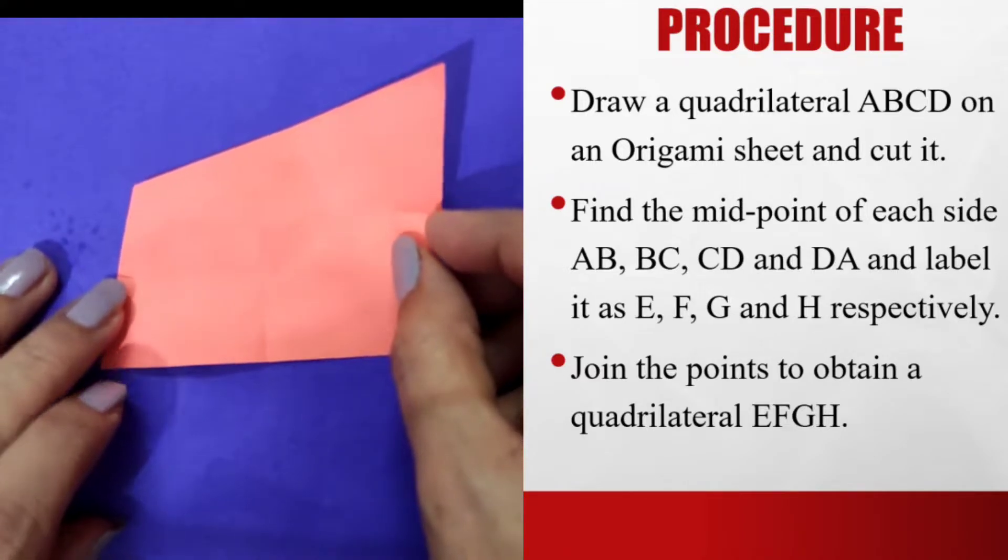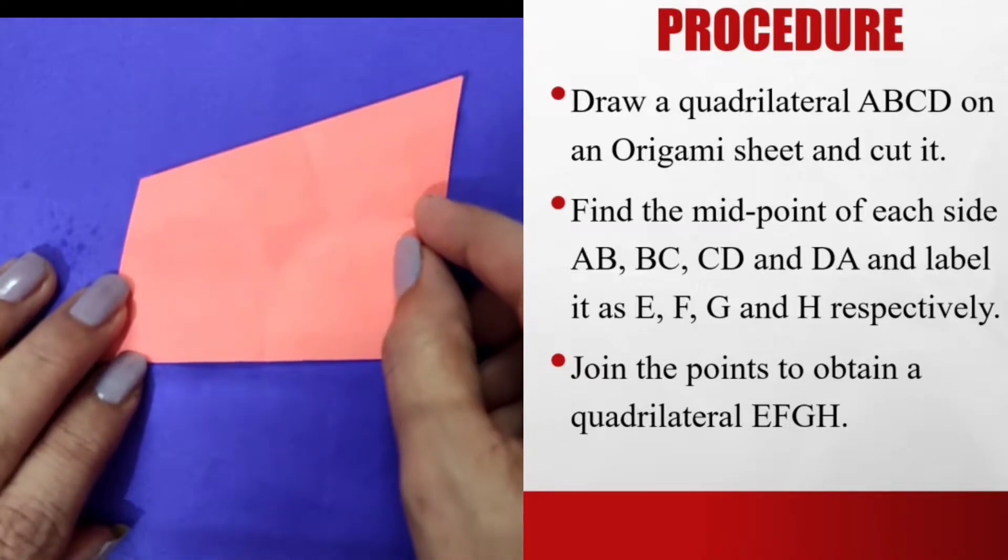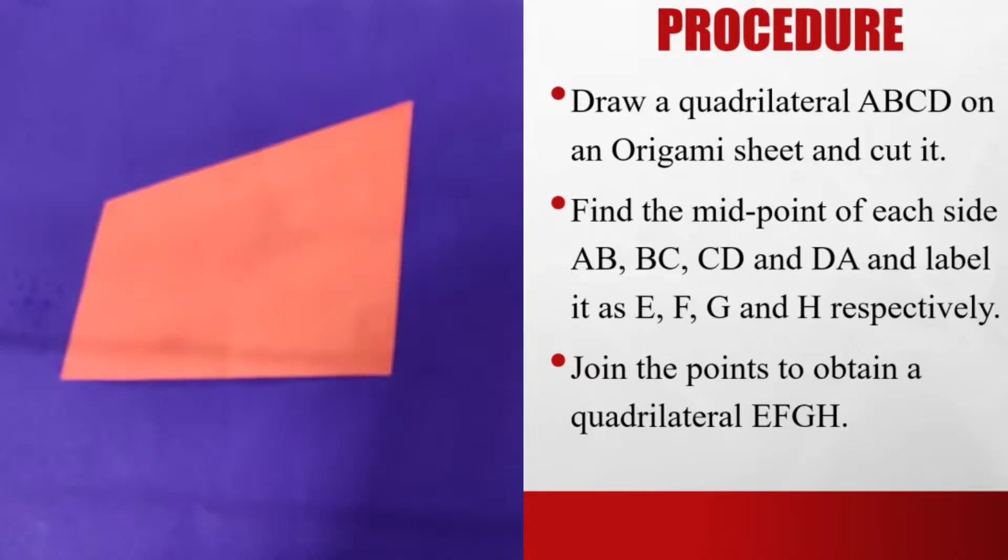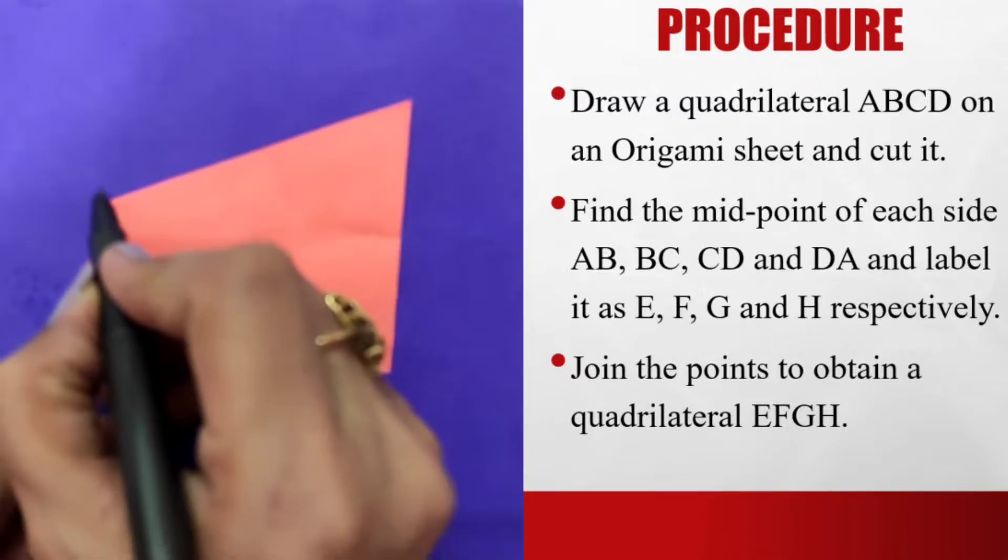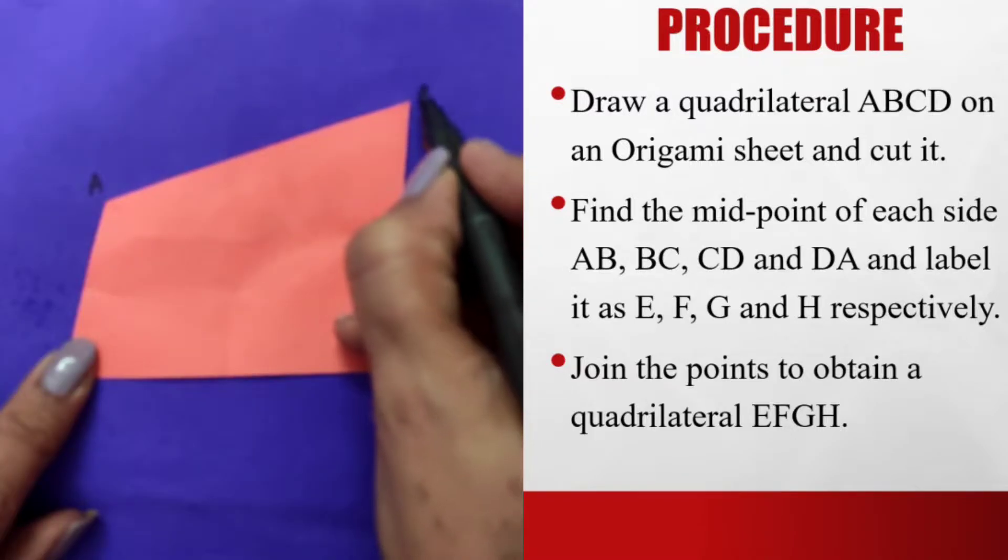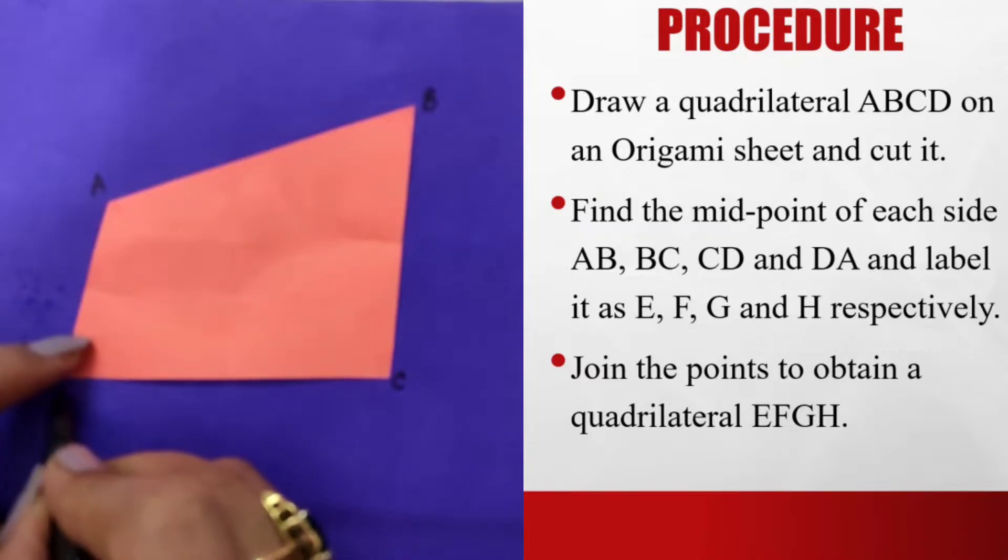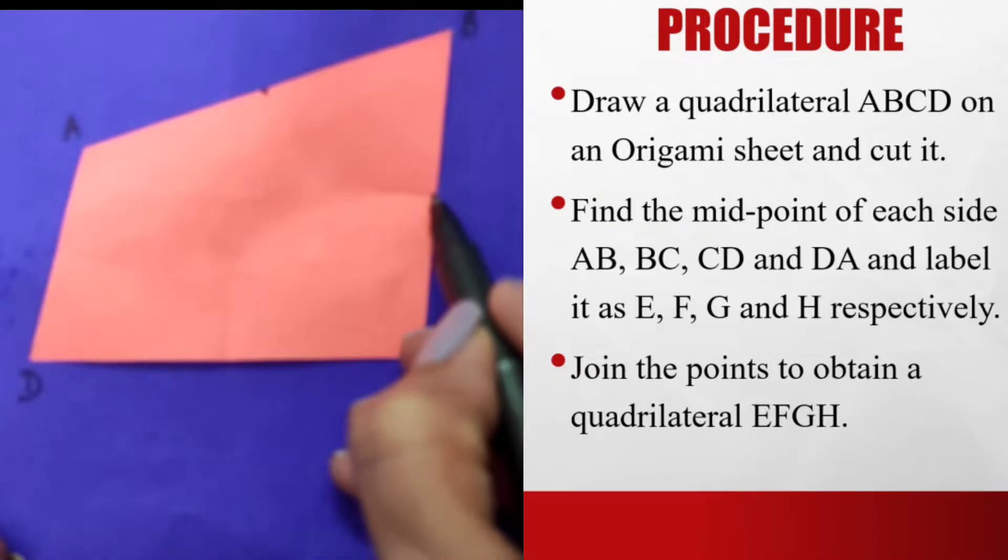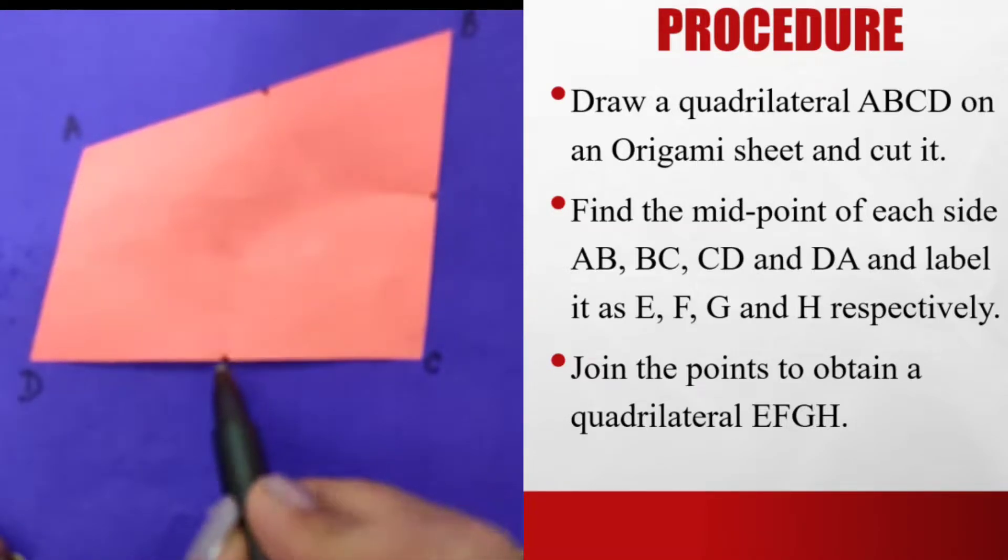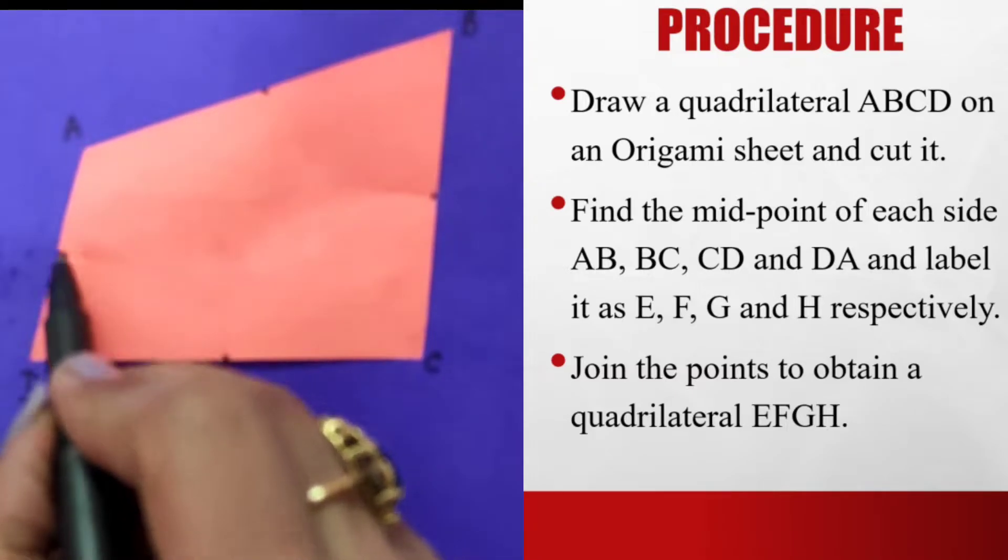I paste the quadrilateral on this origami sheet. Again, I just mark the vertices as A, B, C, and D. I just found them out by the paper folding method. So these are the midpoints that I have found.